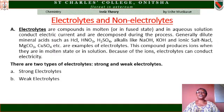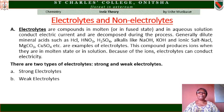Let us now look at electrolytes and non-electrolytes. Electrolytes are compounds in molten or aqueous states that enable solutions to conduct electric currents and are decomposed during the process. Generally, dilute mineral acids like hydrochloric acid, trioxonitrate(V) acid, and tetraoxosulphate(VI) acid; alkalis like sodium hydroxide and potassium hydroxide; and ionic salts like sodium chloride, magnesium trioxonitrate(V), and copper(II) tetraoxosulphate(VI) are examples of electrolytes. These compounds produce ions when they are in molten state or in solution. Because of the ions, electrolytes are good conductors of electricity.